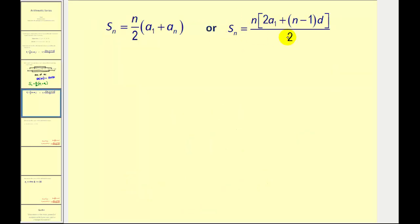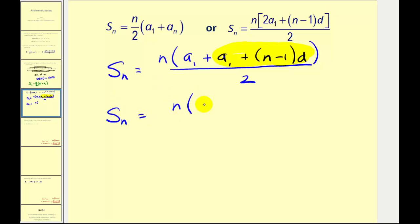Now let's take a look at the second formula. One thing we'll notice is that this formula requires the last term in the series and this formula doesn't. But of course they are related. If we were to take a closer look at this formula, we could rewrite two times a sub one as a sub one plus a sub one. And a sub one plus a sub n minus one times d is equal to a sub n. So this would just become S sub n is equal to n times a sub one plus a sub n all over two, which could be rewritten as this first formula here.